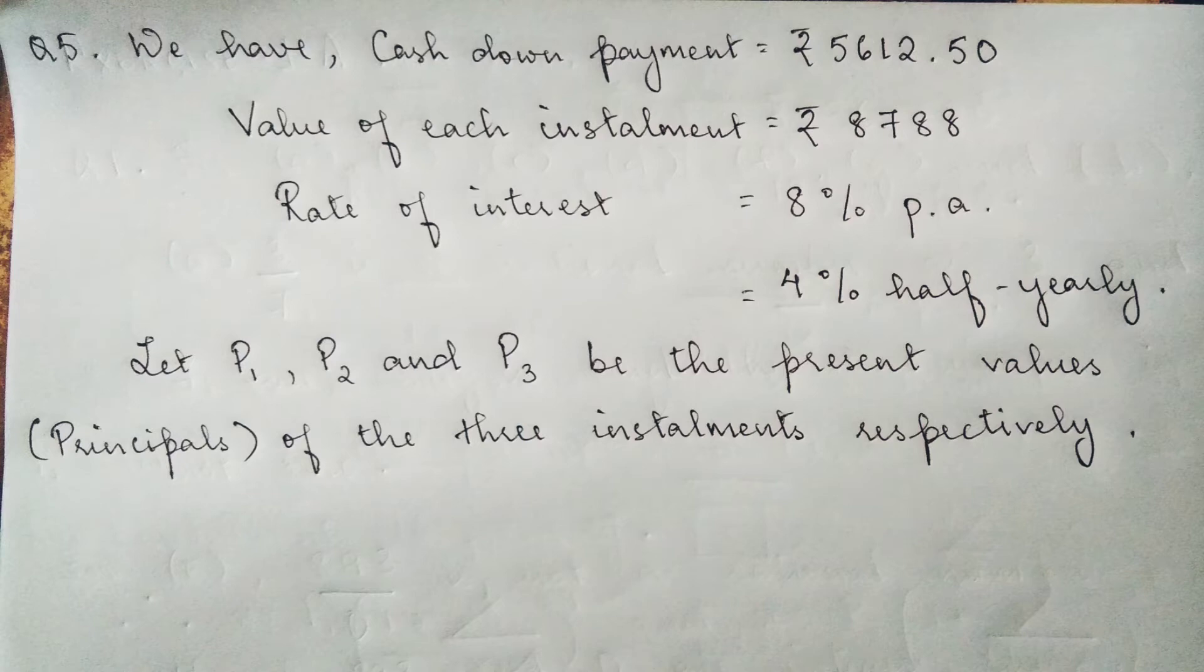We will write that P1, P2 and P3 be the present values. We don't need to write let X be the value of each installment because it's already given in the question. So we will only write P1, P2 and P3 be the present values of the three installments respectively.